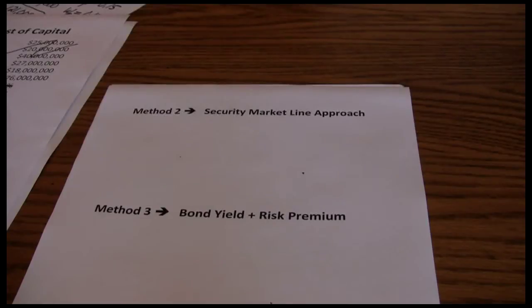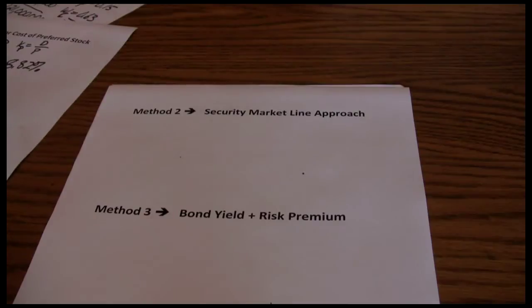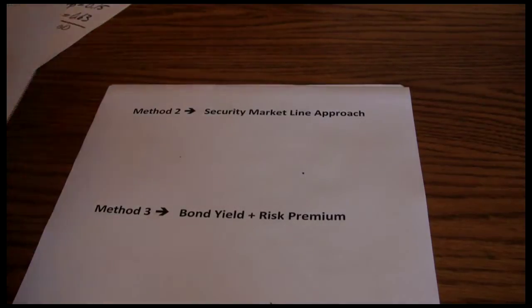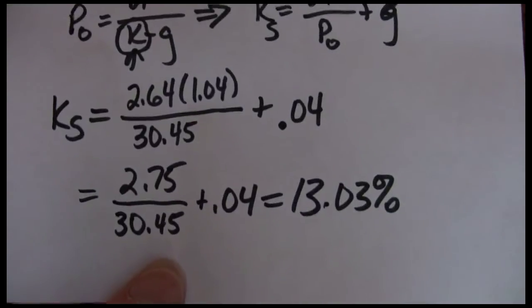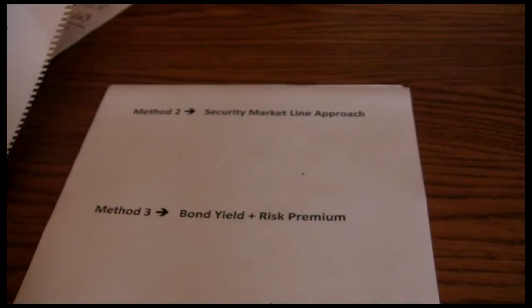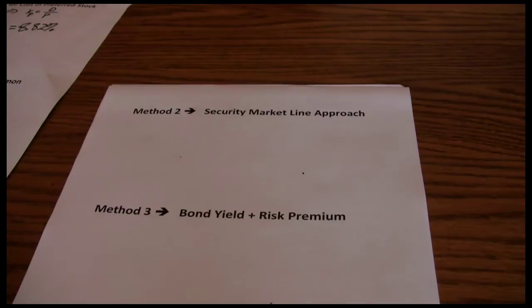We're working on estimating the cost of common stock financing. We had done method one, the dividend valuation approach, previously in our last video and came up with 13.03%. But we said the problem with that approach was it assumes a constant growth rate and it requires firms pay dividends. So we need some backup approach when those two assumptions are not realistic.